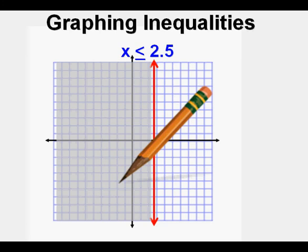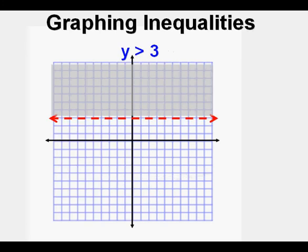We can also graph inequalities using the y variable. This one is y is greater than 3 — not equal to, but greater than. Since we're using the y variable, we draw a horizontal boundary line. Since it's greater than, it's a dashed line, and the shading is above the dashed boundary line.